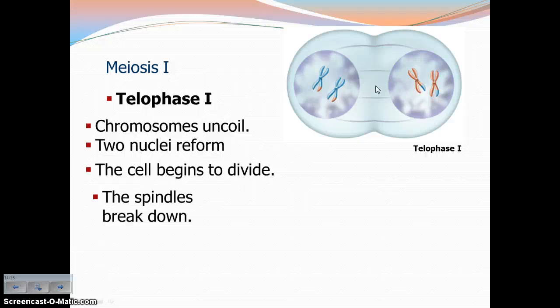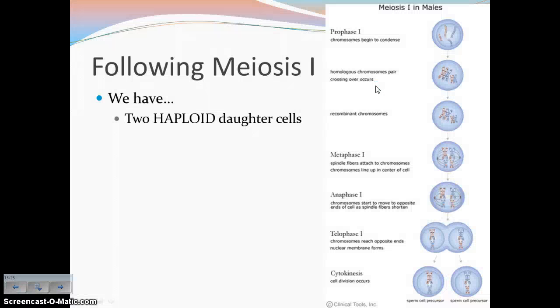In telophase I, it's similar to telophase of mitosis. The chromosomes are uncoiling, the nuclei are reforming, the cell is beginning to divide, and the spindle fibers are breaking down — not any different from what happens in telophase of mitosis. So following meiosis I, we've gone through one nuclear division. We now have two daughter cells, and at this point the cells are haploid, because the homologous chromosomes have been separated.